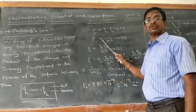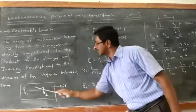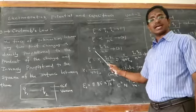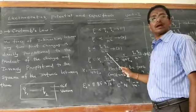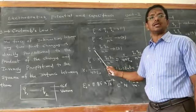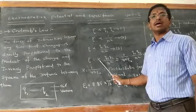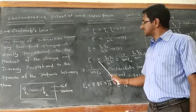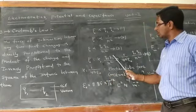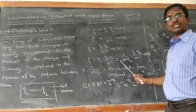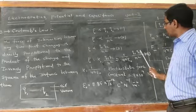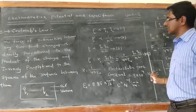And the force is inversely proportional to the square of the distance between them — equation 2. Combining equations 1 and 2, F is directly proportional to Q1Q2 divided by R squared — equation 3. To remove the proportionality, we introduce a proportionality constant K₀. Therefore, F = K₀ × Q1Q2 / R² — equation 4.